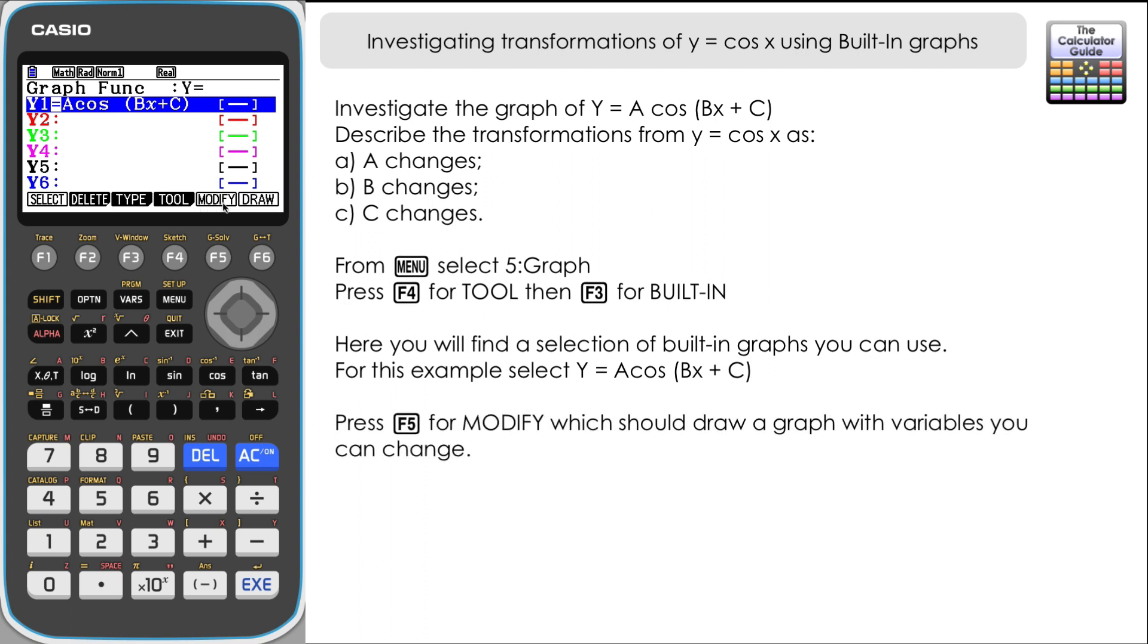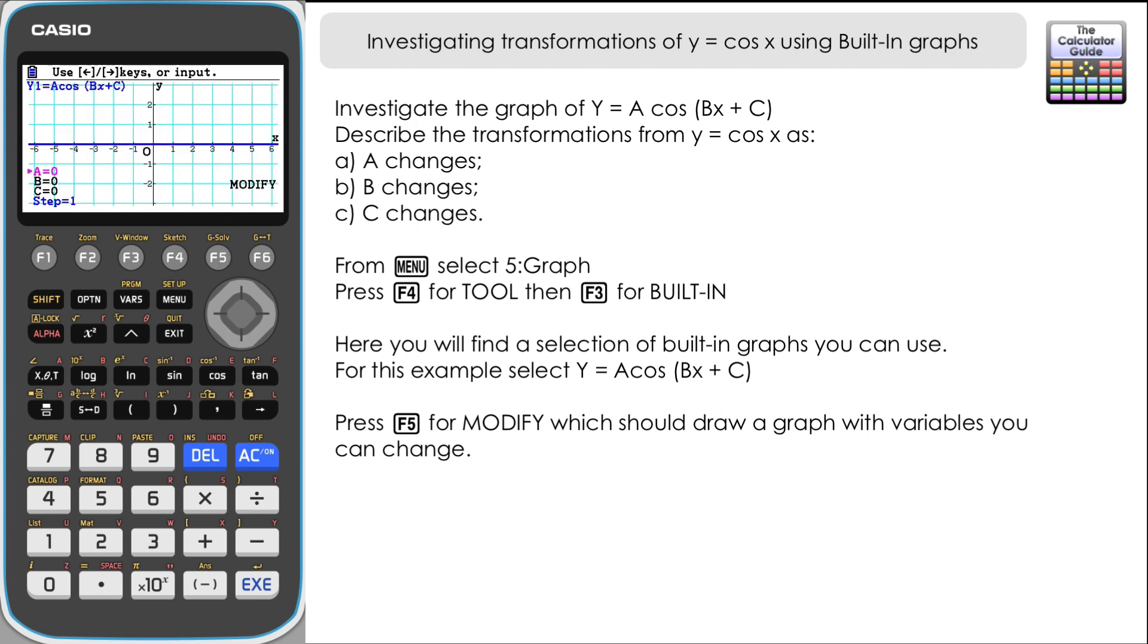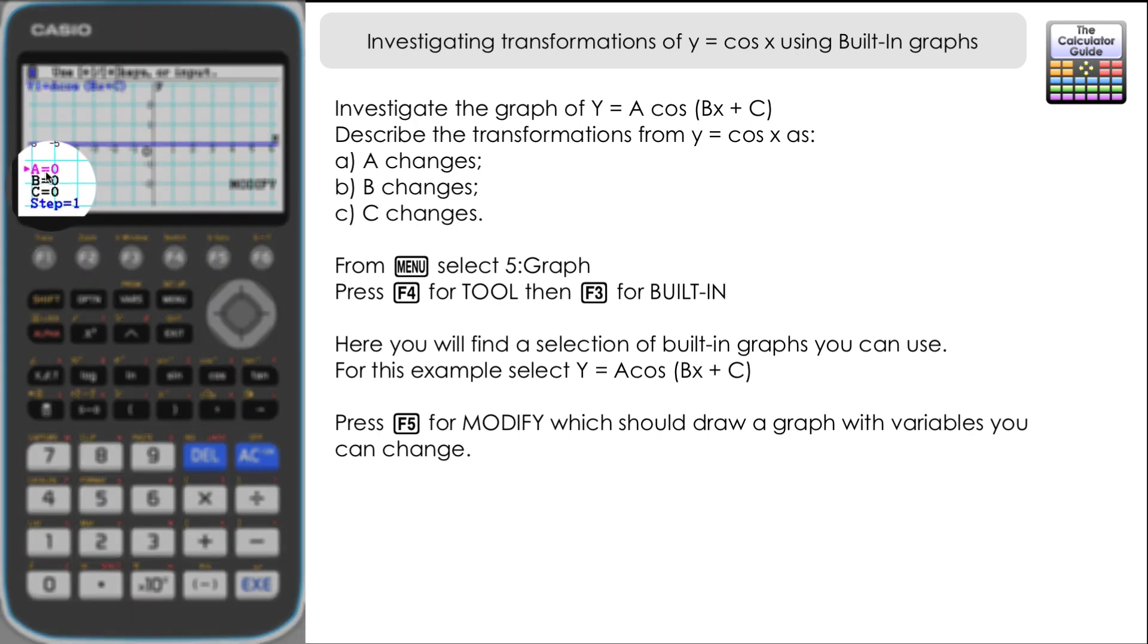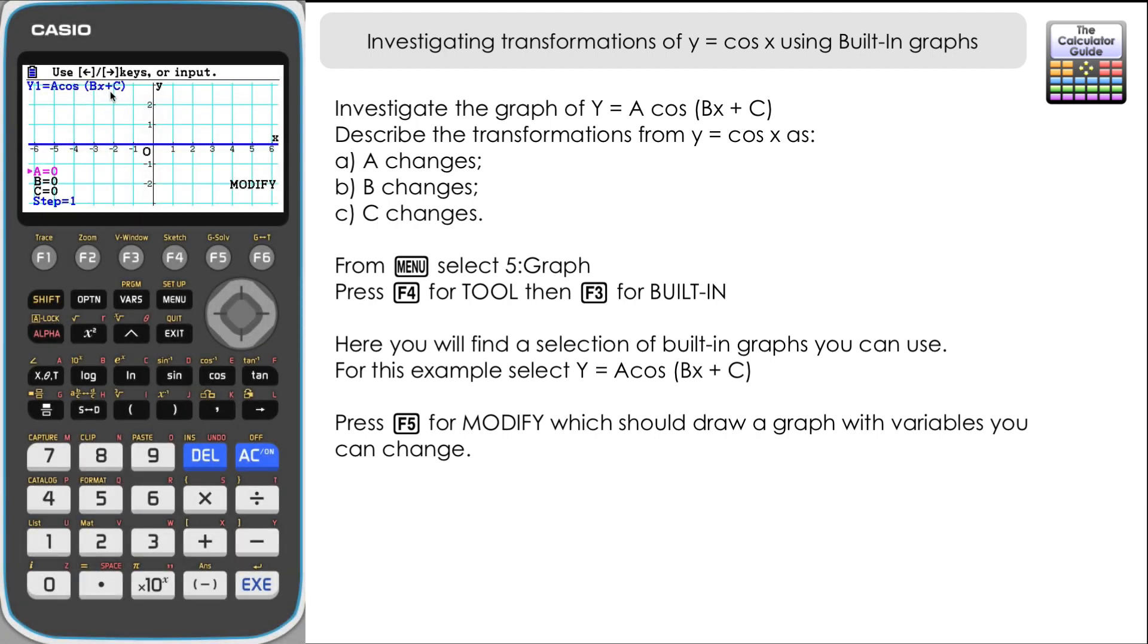Once we have the graph there, press F5 for modify. Now let's take a look at what's going on on this screen. We have the variables listed in the bottom left hand corner. At present they're all marked as zero. Now at present it's just displaying y equals zero because all the variables are zero. So let's alter those. Let's start with a. If we just input one at this stage, just press one.